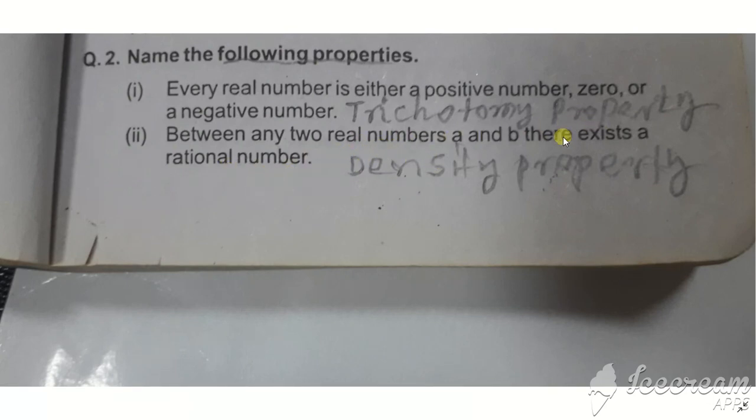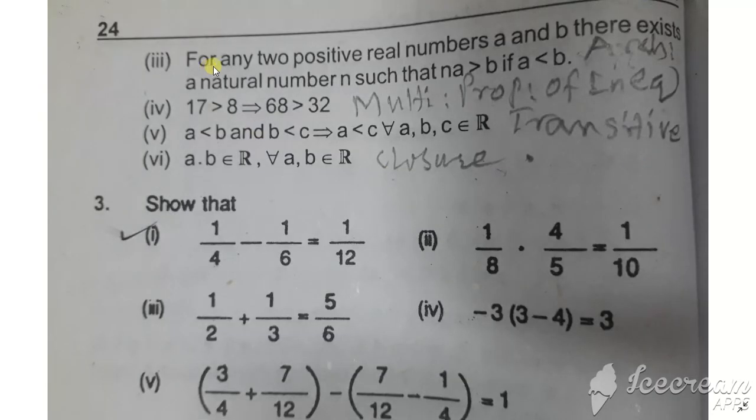Part ii: Between any two real numbers there exists a rational number. This is the density property of rational numbers.